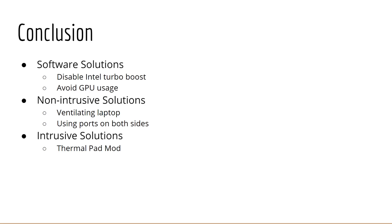Those are all the tips I have to cover. Personally, I use every tip here except using ports on both sides, as I use a Thunderbolt 3 dock. Overall, after following these steps, I haven't experienced throttling issues at all. I hope this helps. If you have any suggestions or tips on how to manage MacBook temperatures, please leave them in the comments.